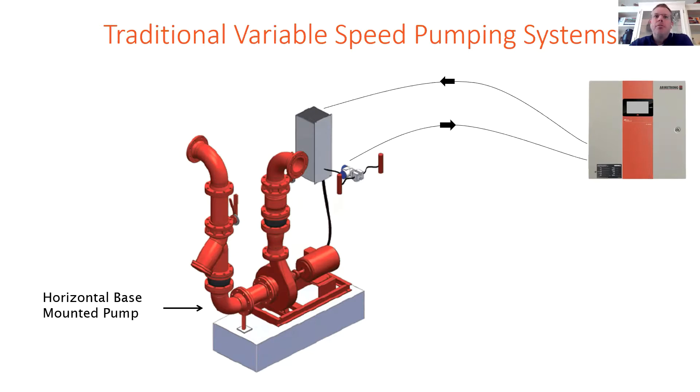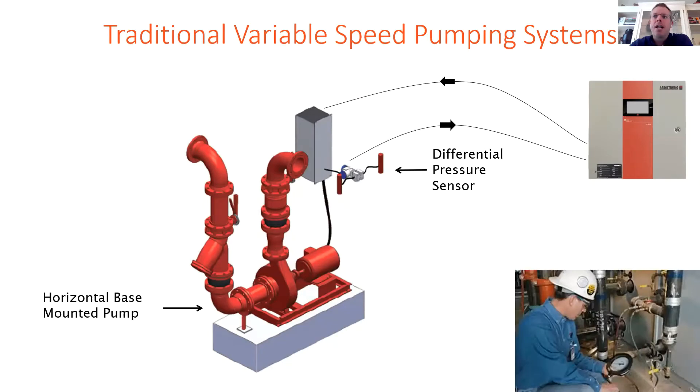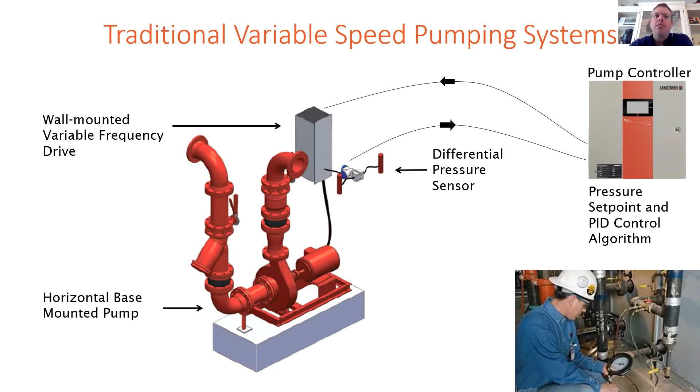So with a traditional variable speed pumping system, there's a differential pressure sensor that's located out in the system somewhere. Via a test and balance contractor, a minimum pressure set point is determined, which will satisfy the most remote load during normal operation. The pump controller is then going to vary the speed of the pump motor via variable frequency drive to ensure that the differential pressure set point is maintained as two-way valves open and close out of the system.